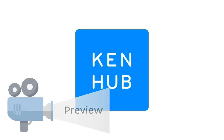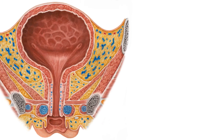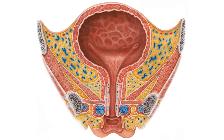Hello everyone, this is Joel from KenHub and welcome to another anatomy tutorial where this time we're going to be focusing on the female urinary bladder. Now the urinary bladder is a hollow organ that serves to collect urine filtered through your kidneys. Throughout this tutorial we will focus on the structure and parts of the urinary bladder in the female pelvis.